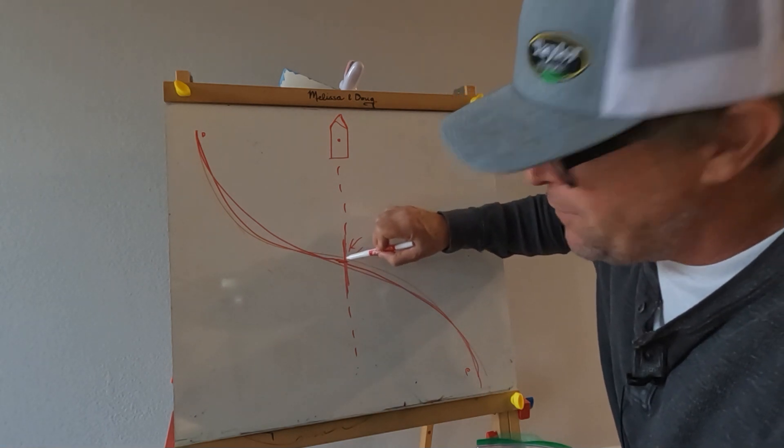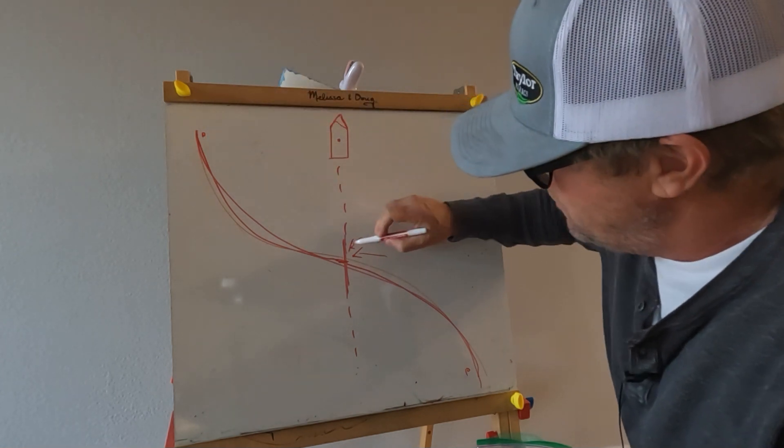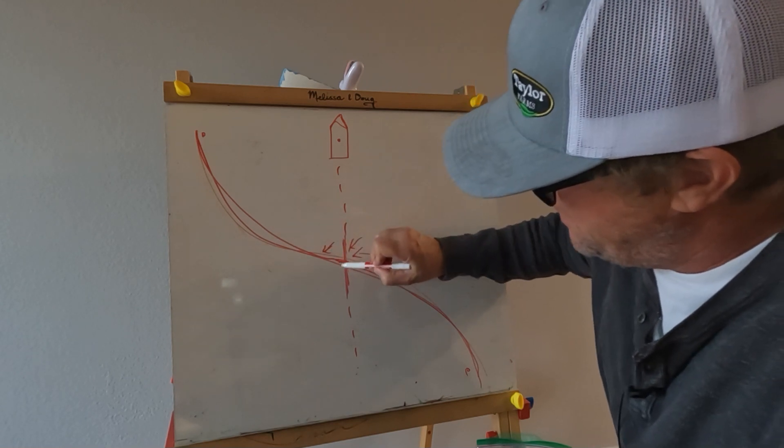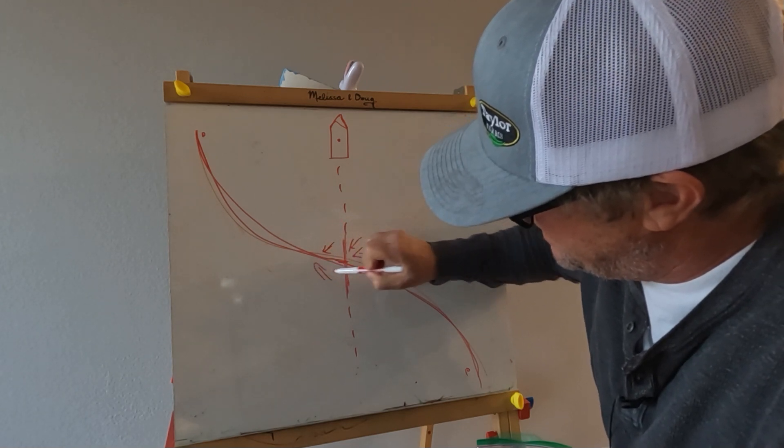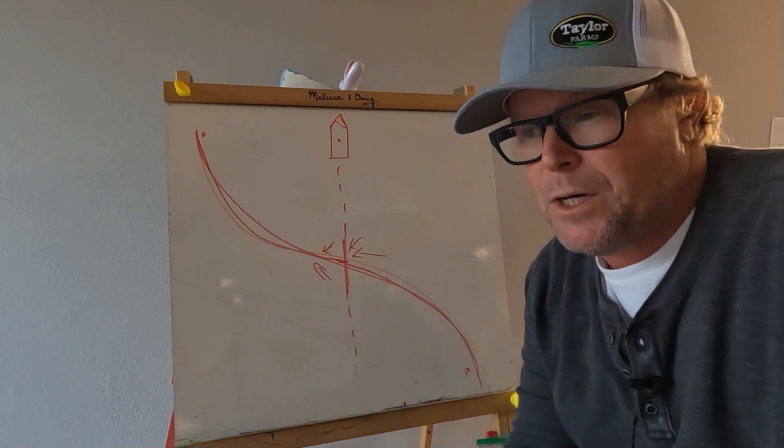...the path of the handle is arcing this way. So if your ski is still trying to go this way and the handle is going this way, what do you think is going to happen?